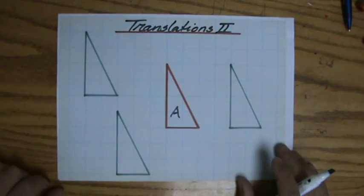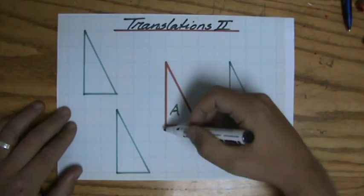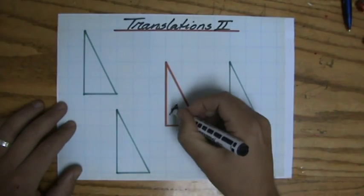Yes, welcome back. We're still doing translations, which is a type of transformation. I have sketched an object A, which is, as you can see, a triangle.